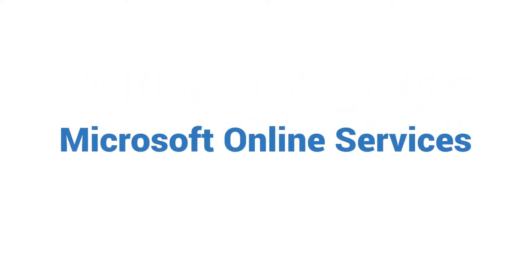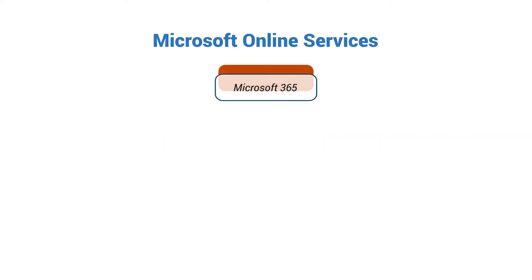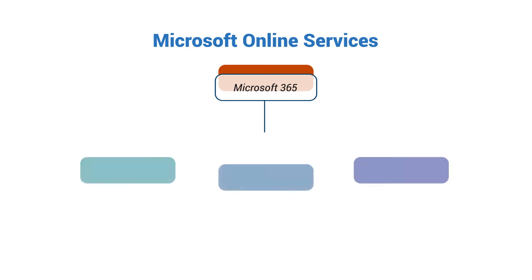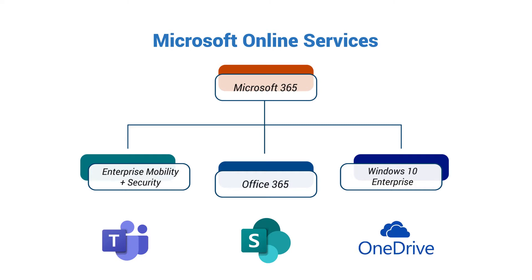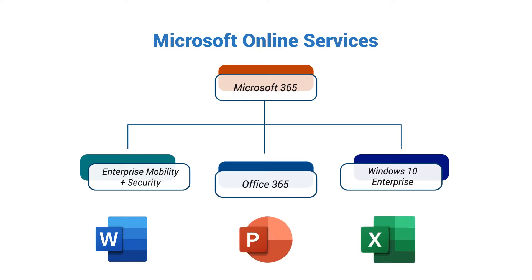I prefer to think of it as a hierarchy where you've got this enterprise mobility and security component — obviously that's going to be security driven. You have Office 365 that encapsulates all of the productivity offerings from Microsoft: Teams, SharePoint, OneDrive, even the Power Apps, Power Automate, Power BI, all of those capabilities and components. And of course the classic Office suite — Microsoft Word, PowerPoint, Excel, etc. All of those are really tied to that license. And then you have this Windows 10 Enterprise piece, which is going to be your operating system.